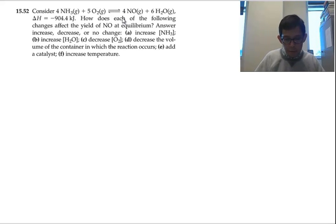Consider 4NH3 plus 5O2 yields 4NO plus 6H2O. Delta H is negative 904.4 kilojoules, so it's exothermic.